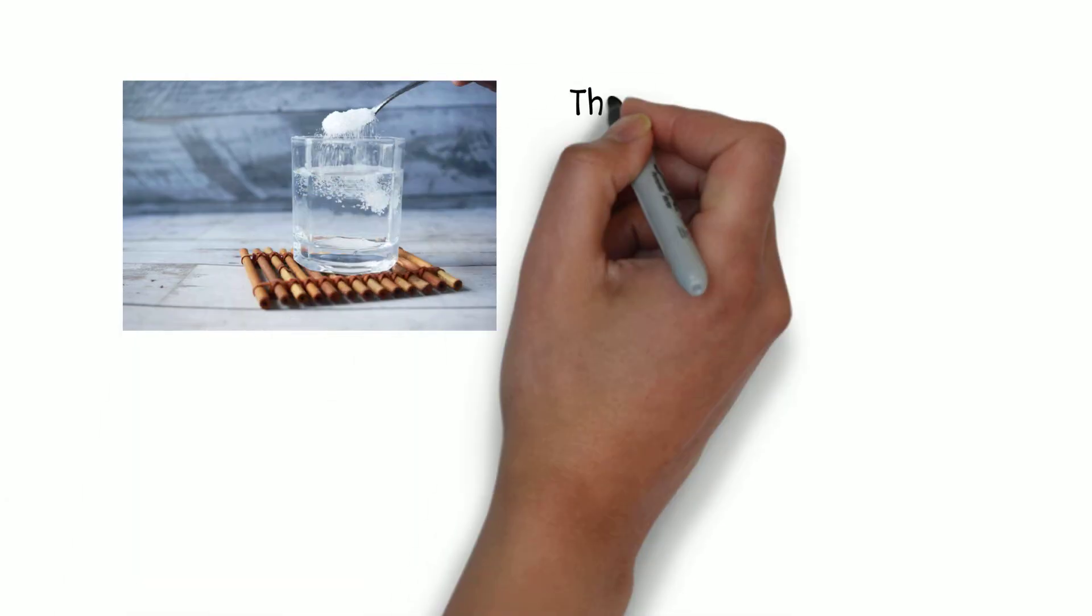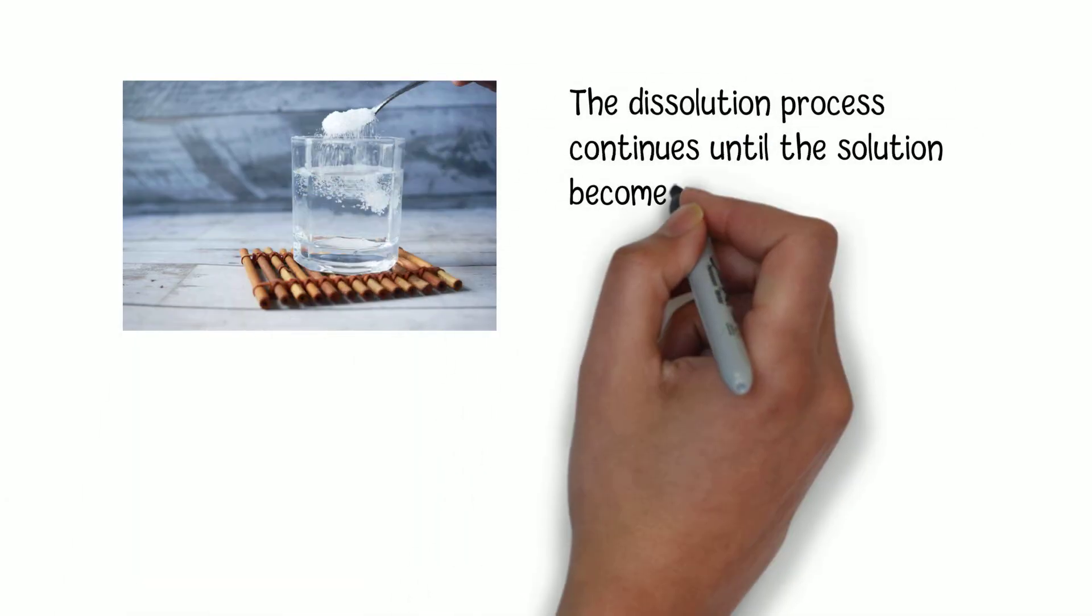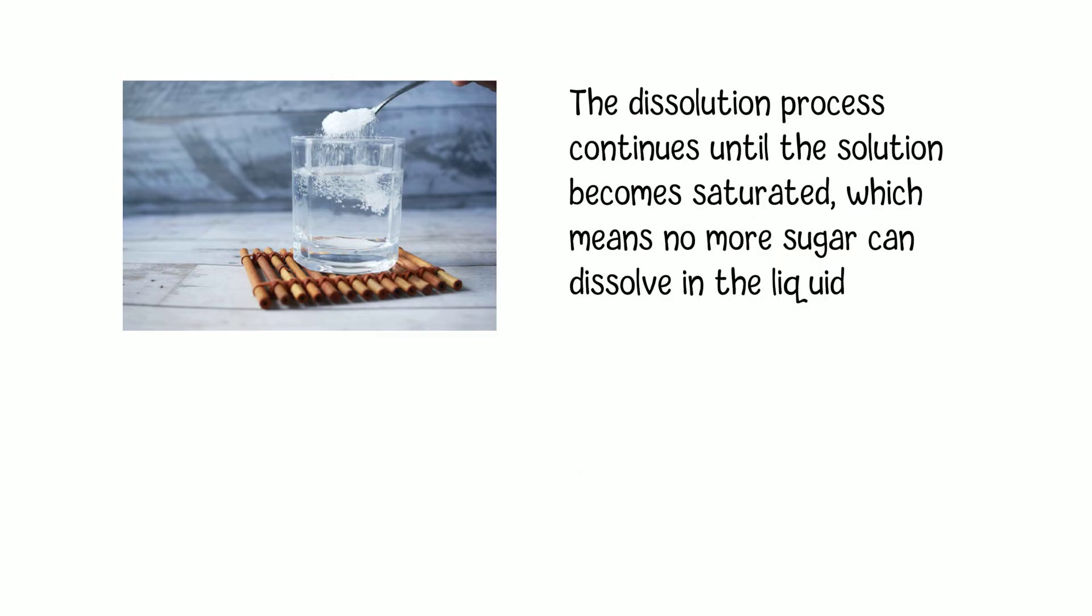The dissolution process continues until the solution becomes saturated, which means no more sugar can dissolve in the liquid at that temperature and pressure. If you add more sugar than the liquid can hold, which will create a supersaturated solution, excess sugar will usually settle at the bottom of the container.